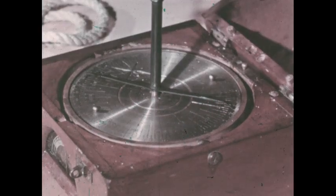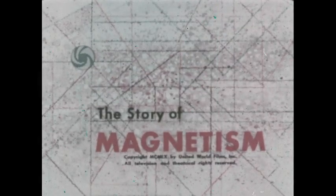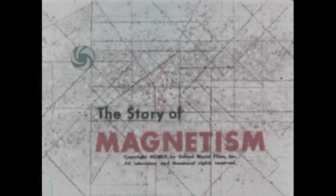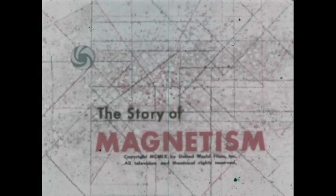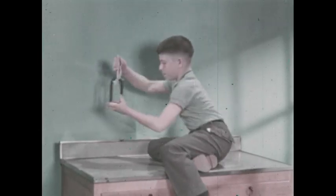It has no fingers but it can pick things up. It has no brain but it can choose the things it picks up. You cannot see it. A compass, a telephone system, a tape recorder. This is the story of magnetism and how we use it. Johnny uses magnetism.